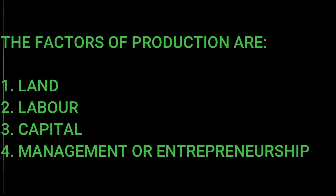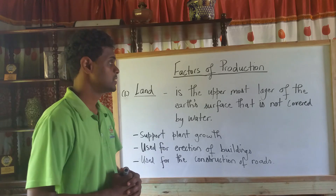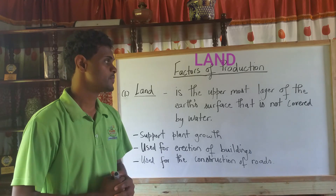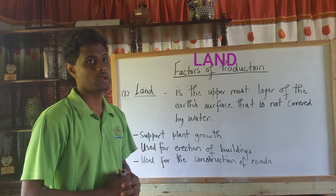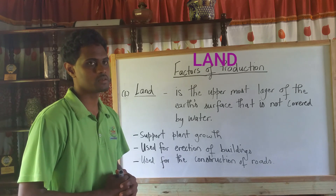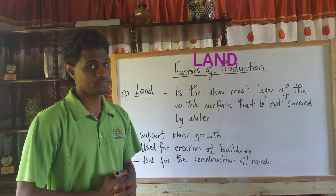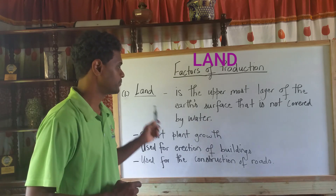Land is the uppermost layer of the earth's surface that is not covered by water, and as you should know, it consists of the soil. So the soil is a part of the land.